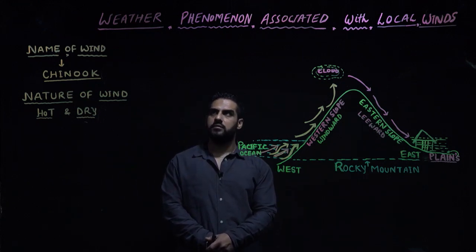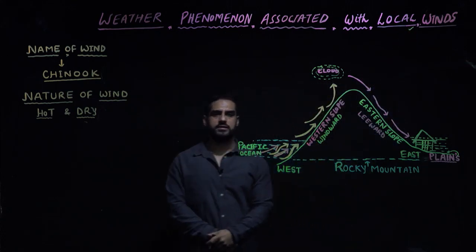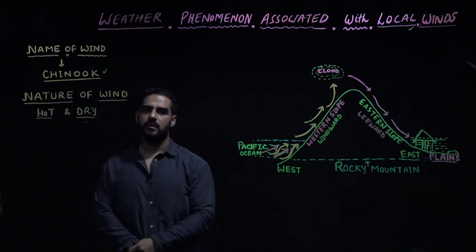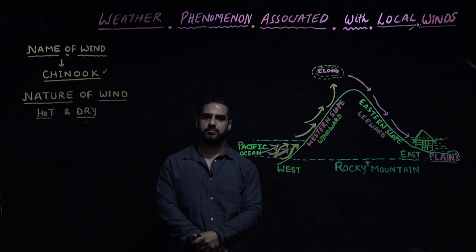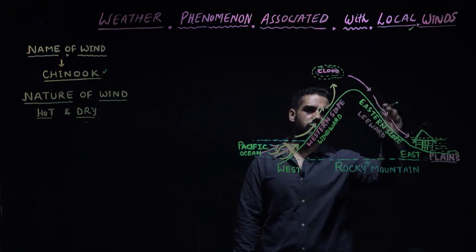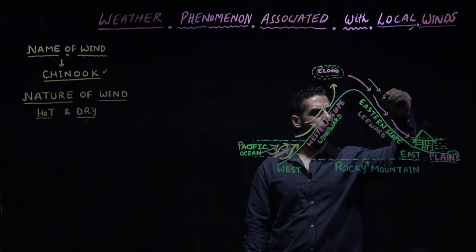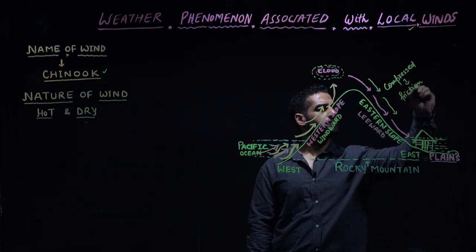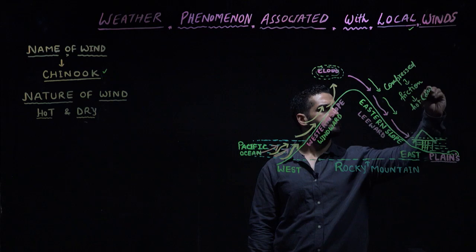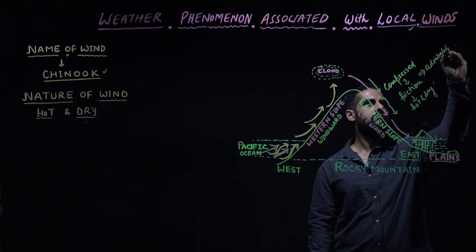Now we will discuss the weather phenomena associated with local winds. One of the local winds which is hot and dry is Chinook. Chinook blows along the eastern slope — the leeward slope — of the Rocky Mountains. As it moves down along these slopes, it gets compressed and due to friction it becomes a hot and dry wind. In simple terms, it is an outcome of adiabatic heating.